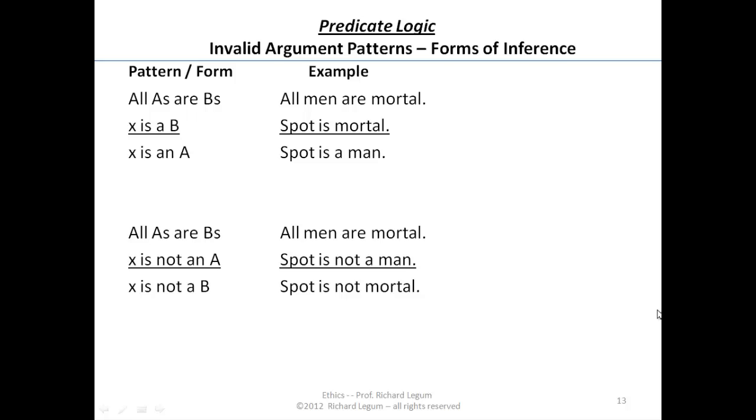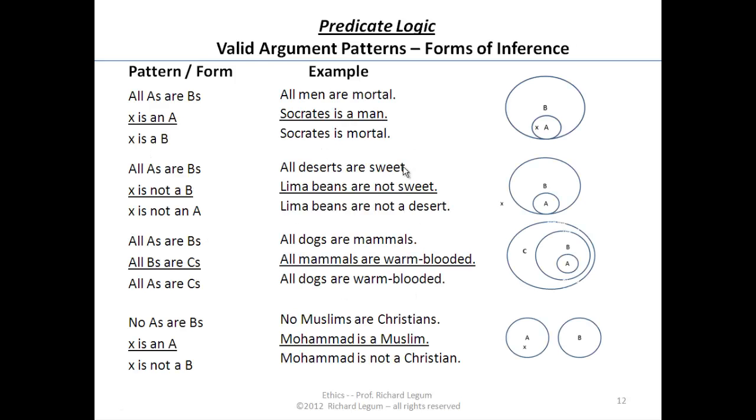Notice something interesting in the good and the bad patterns. I'd just like to roll back one slide and point something out to you. When we're going all As are Bs, we read from left to right, then the second premise is x is an A, therefore x is a B. So if we're going in the positive direction, x is an A, x is a B, we can make that conclusion.